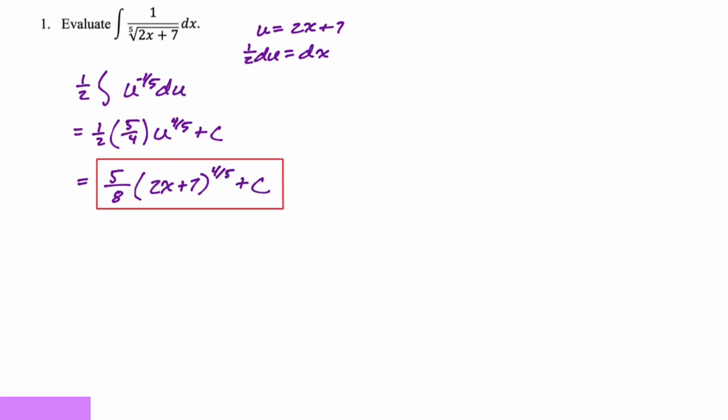Evaluate the integral one over the fifth root of two x plus seven. So I'm definitely doing u-substitution, u is two x plus seven. I'm going to rewrite this with a negative exponent. One half du is dx. So one half integral u to the negative one fifth du. We're just reversing the power rule here. So we'll get five fourths u to the four fifths plus c, and then u is two x plus seven.